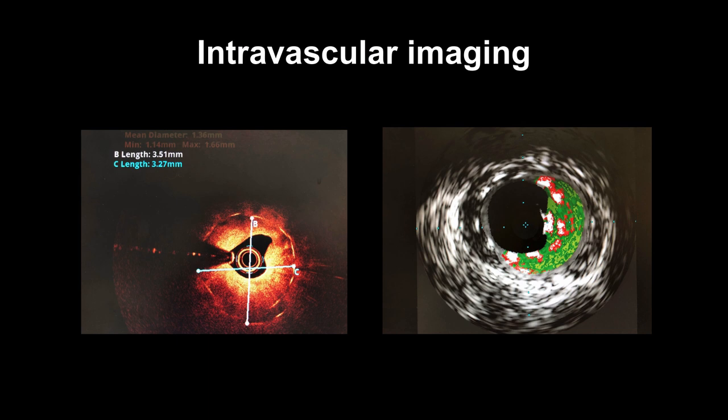Intracoronary imaging is now easy to use and is therefore increasing in popularity. It is good for determining the true size of vessels and also in helping to avoid stenting into significant plaques. It has the benefit of being able to visualize and accurately measure the reference size of the vessel and not just assess the lumen. It can also look at plaque characteristics such as calcification.